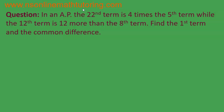Now this is a word problem on arithmetic sequences, or arithmetic progression — they mean the same. The first question of this session is: in an arithmetic progression, the 22nd term is 4 times the 5th term. As we read the question, let us form the equations, because this is a word problem and we have to form equations.